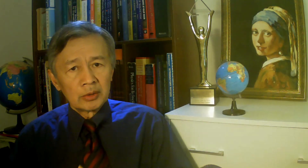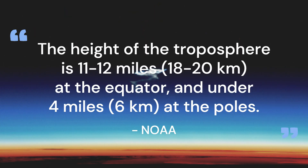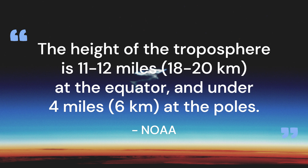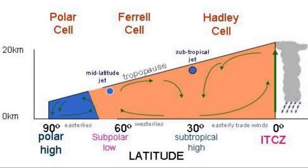To quantify this phenomenon, I googled the related numbers. The height of the troposphere varies from the equator to the two poles. At the equator, it is around 11 to 12 miles or 18 to 20 kilometers, but at the two poles it is just under 4 miles height. That's to say, the thickness at the poles is only one-third of that at the equator. So this diagram is roughly accurate.